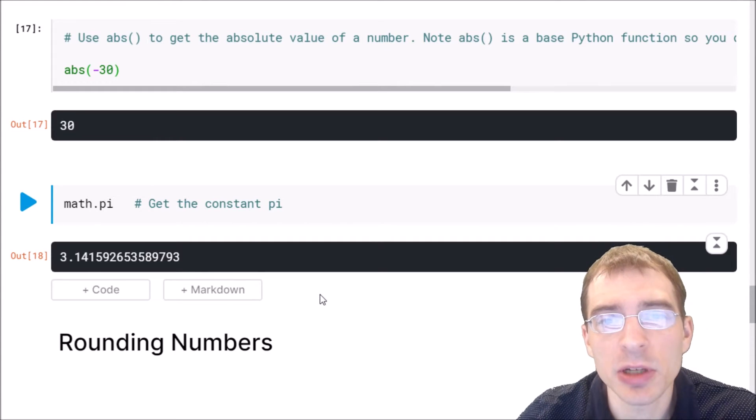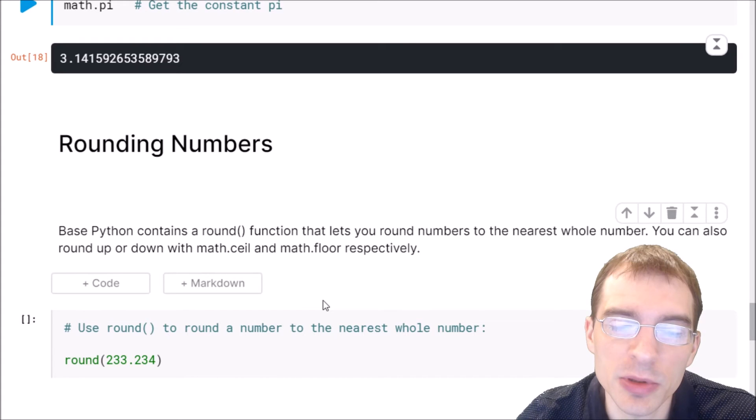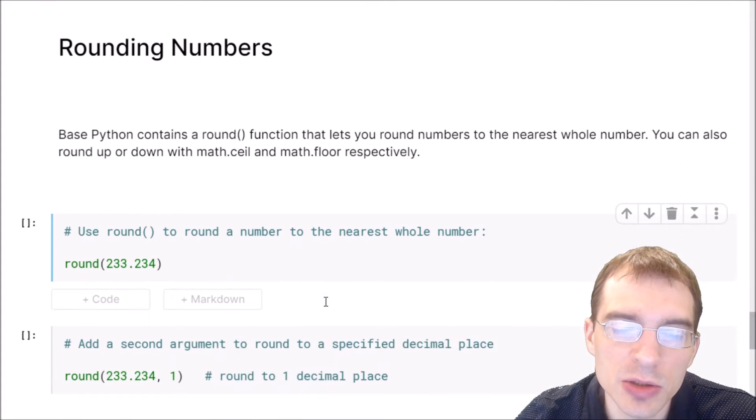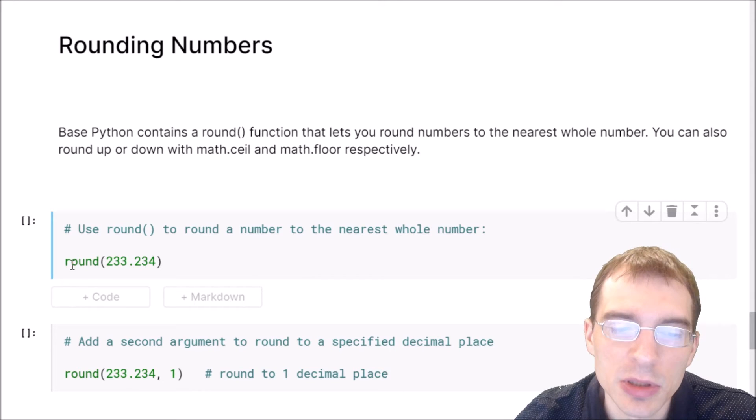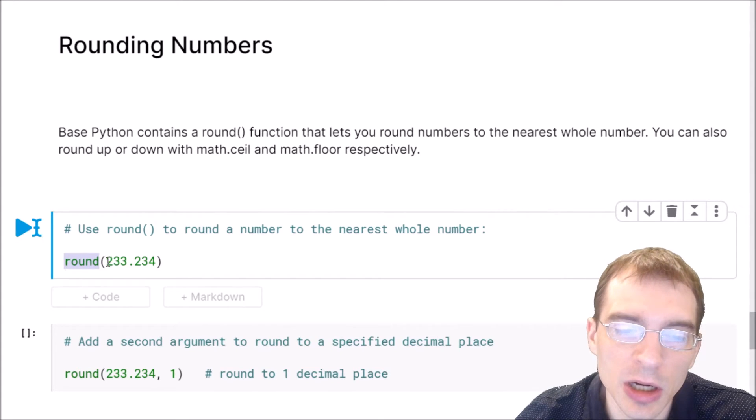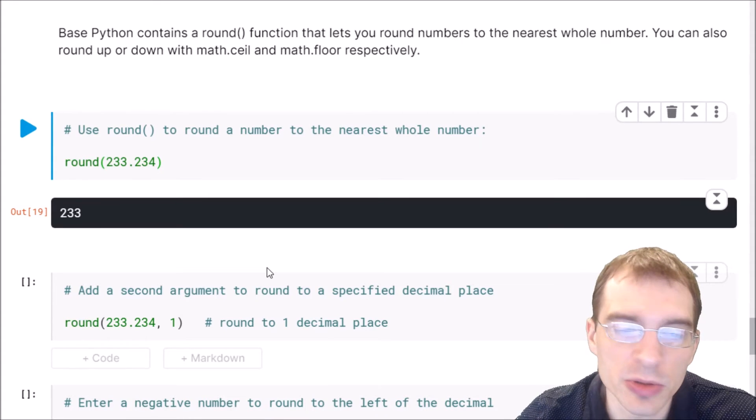To wrap up this first video on Python for data analysis, we'll go into a few different ways of rounding numbers. In base Python, you can use the round function to round something to the nearest whole number. Here we're saying round with this number as our argument. It should round it to 233 and just strip off everything after the decimal point.